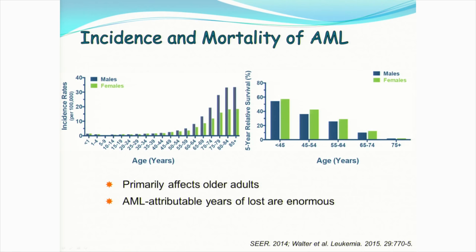AML primarily affects older adults and is more prevalent in patients older than 60 years old. It is a bad disease — outcomes have not substantially improved in the last four decades. In patients older than 65 years old, merely 5 to 10% would be alive five years after initial diagnosis. Considering the average life expectancy at age 65 approaches 20 years, and still more than five years at age 85, the AML-attributable years of life lost are enormous.